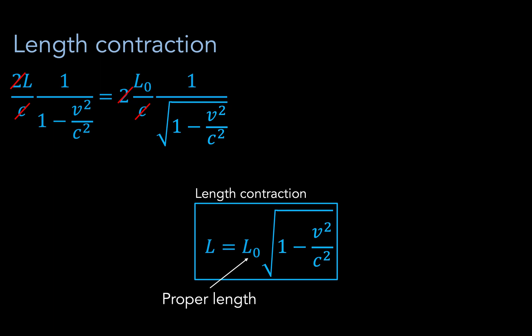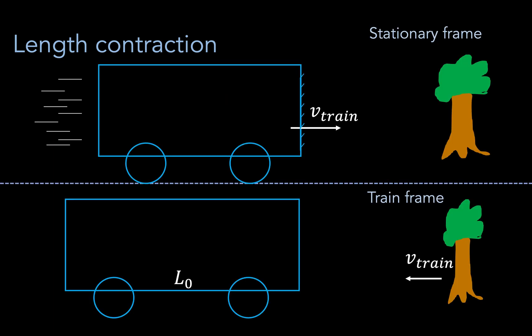Of course, we can express this in terms of our boost factor gamma as well. It's important to note that length contraction occurs only in the direction of motion of the object. In this case, the height of the train would be the same for both observers because the motion is only in the horizontal direction.